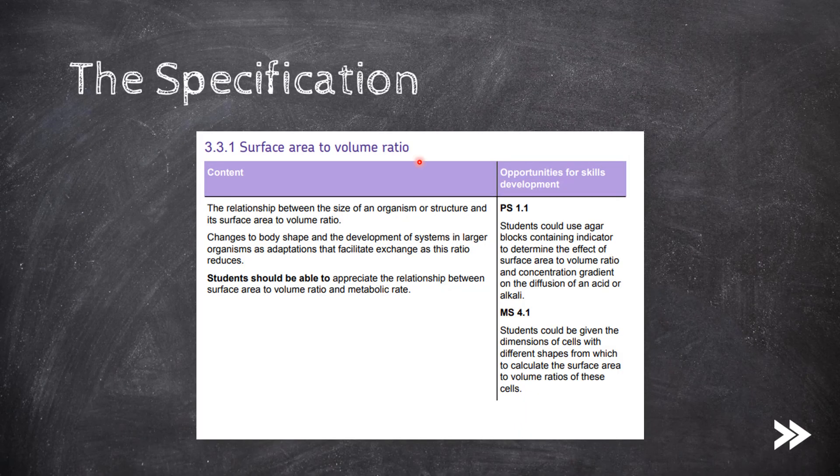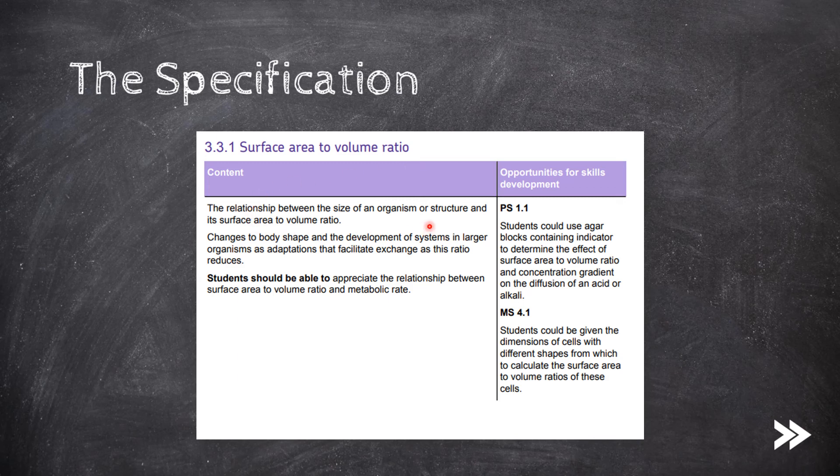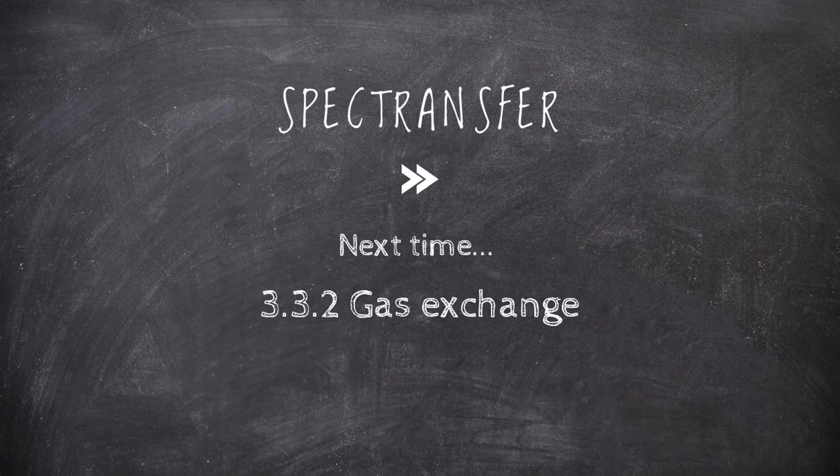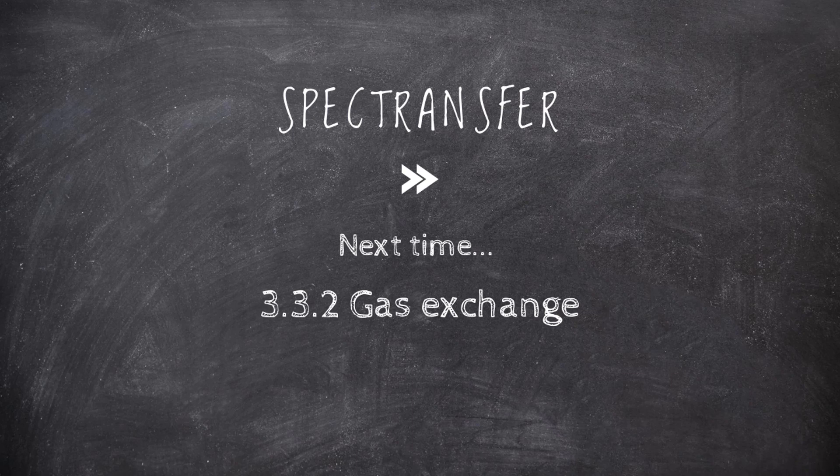Now we've had a look at the relationship between the size of an organism and its surface area to volume ratio, so we can tick that off. And we've also had a look at some of the adaptations of organisms in relation to problems caused by having either a very high or a very low surface area to volume ratio. Thanks for watching SpecTransfer. Next time, we'll be looking at gas exchange.